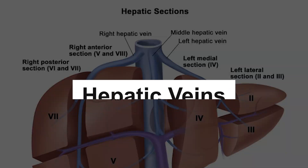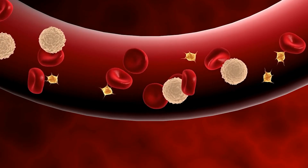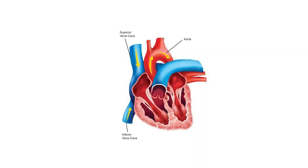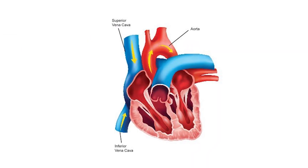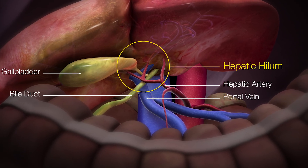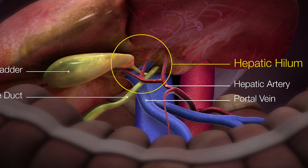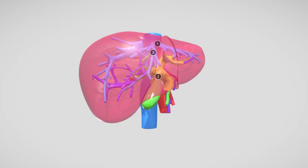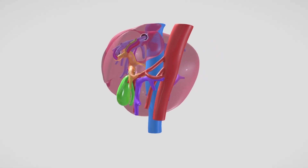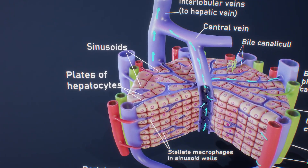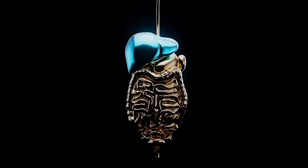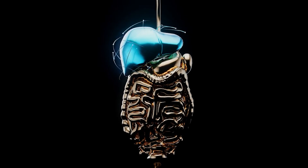Hepatic veins. After the blood has been processed in the liver, it is collected by the hepatic veins. These veins transport the filtered, deoxygenated blood from the liver to the inferior vena cava, a large vein that carries blood back to the heart. The hepatic veins exit the liver at a location known as the hepatic hilum, typically on the underside of the liver. Sinusoids. Within the liver, the hepatic artery, portal vein, and hepatic vein all converge into a complex network of tiny blood vessels known as sinusoids. The sinusoids are lined with hepatocytes and play a crucial role in the exchange of nutrients, gases, and waste products between the blood and liver tissue.